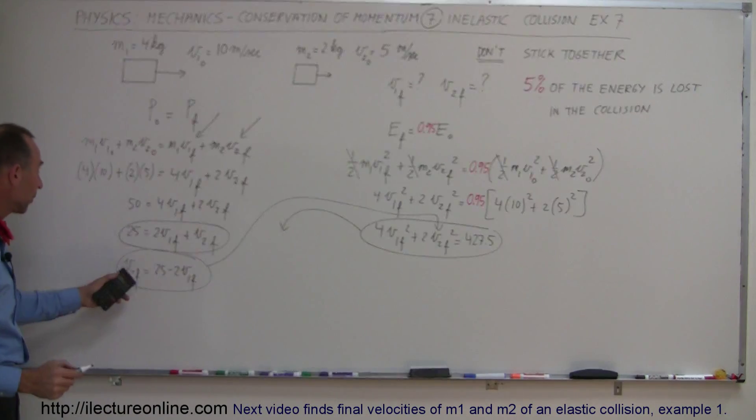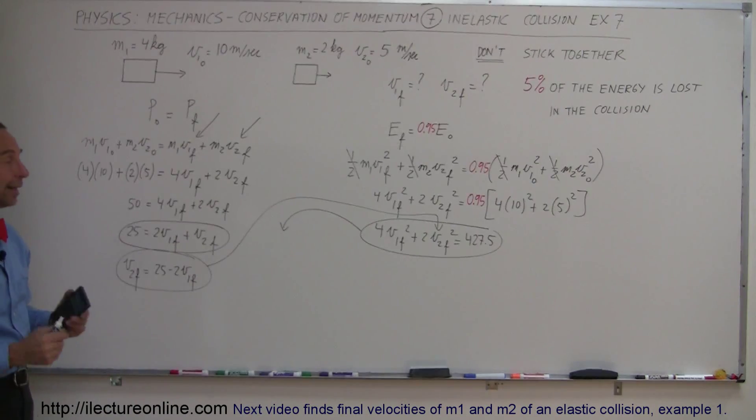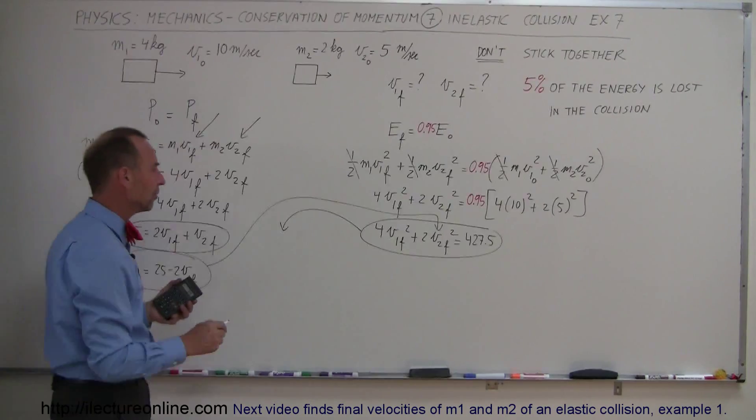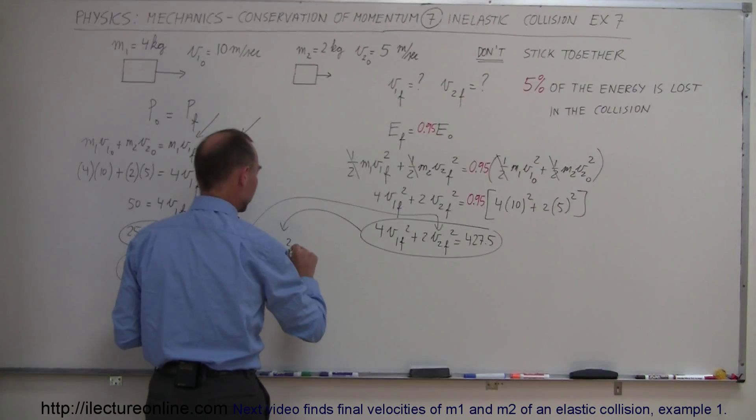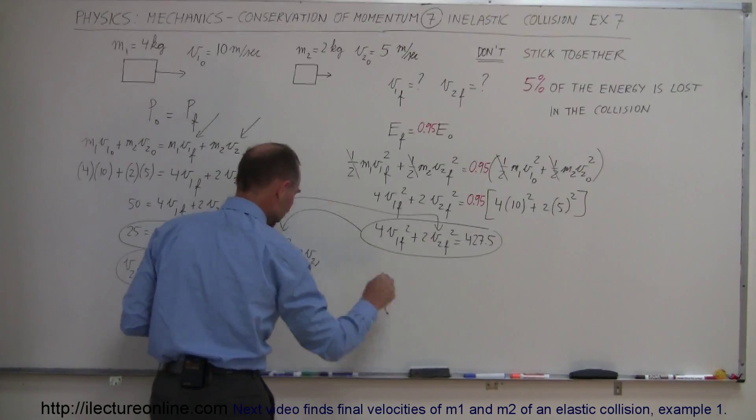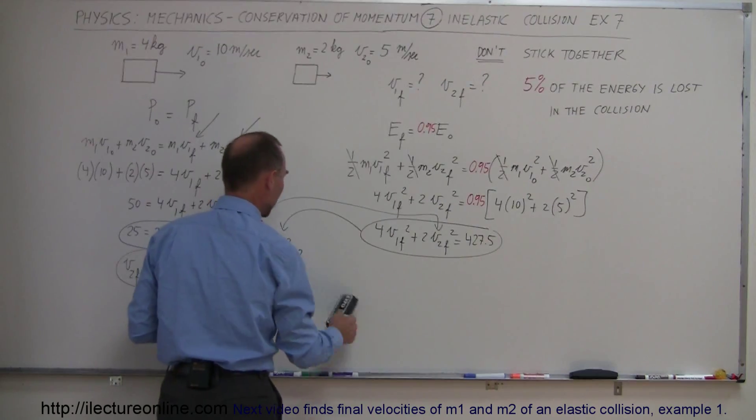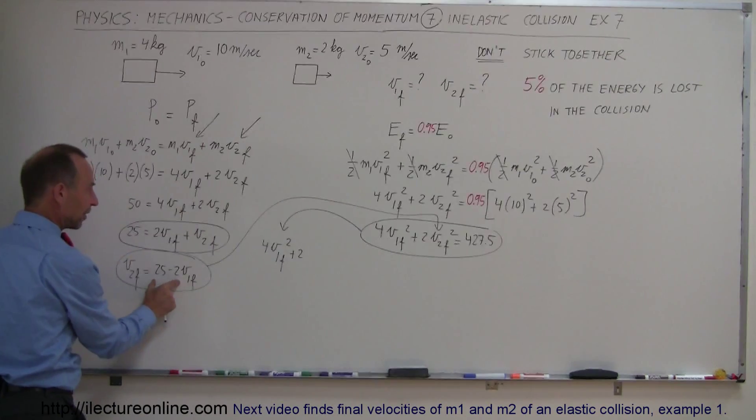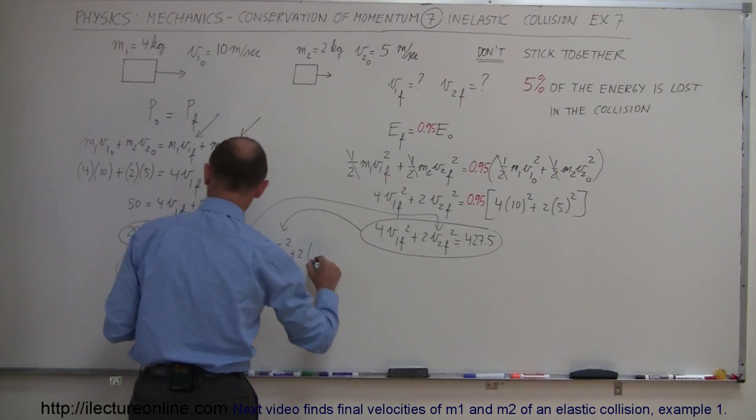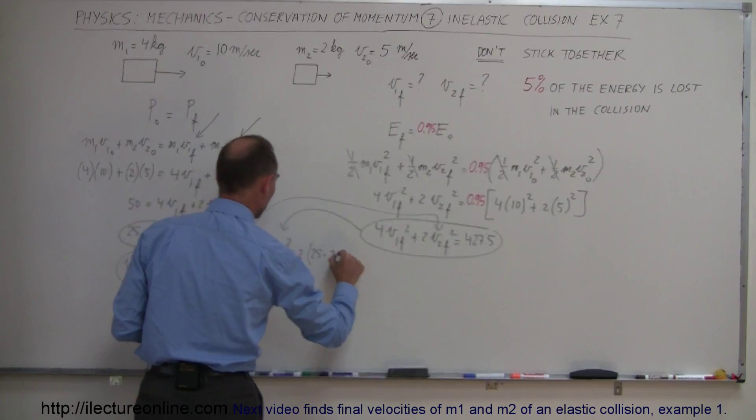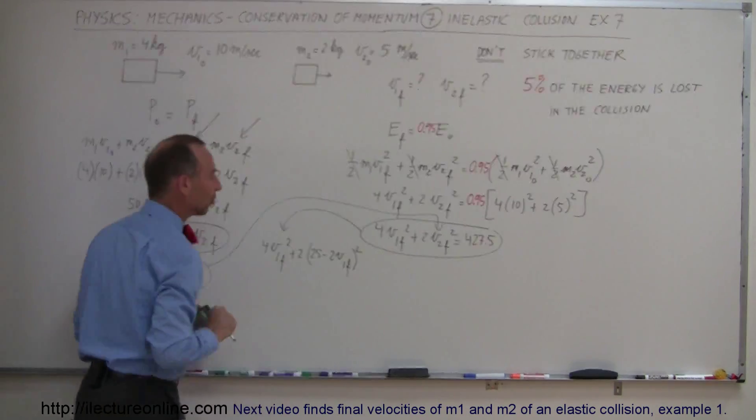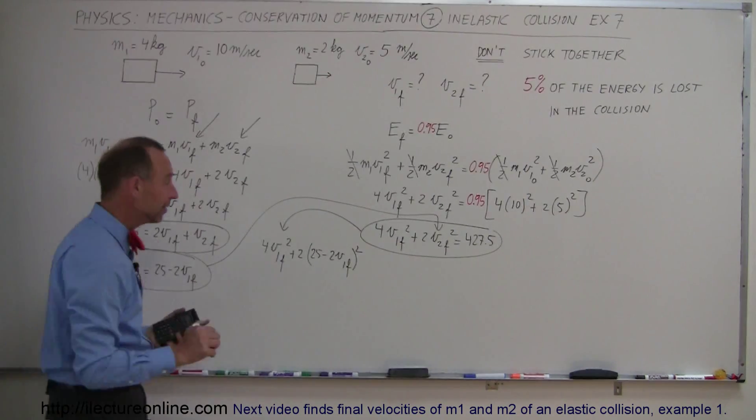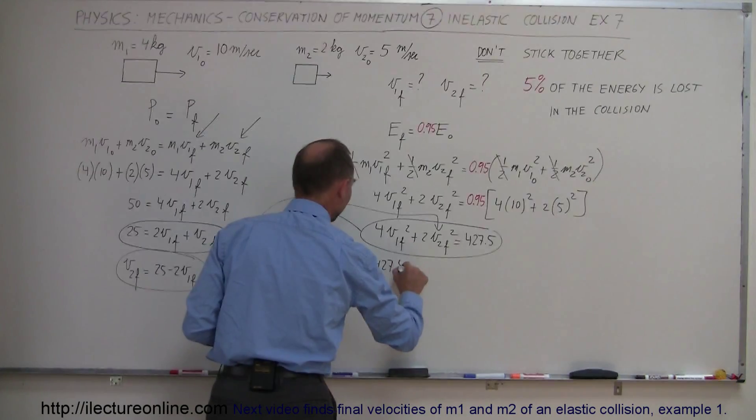We replace that V2 by what V2 is equal to in terms of V1 and now we have an equation with only one unknown. It'll be a quadratic equation but we know how to solve those. So this becomes 4V1 final squared plus 2V2, we don't want to write V2, we now want to write its replacement which is right here, so V2 final is equal to this, so 2 times 25 minus 2V1 final quantity squared, so we replace V2 final by this quantity and that is equal to 427.5.